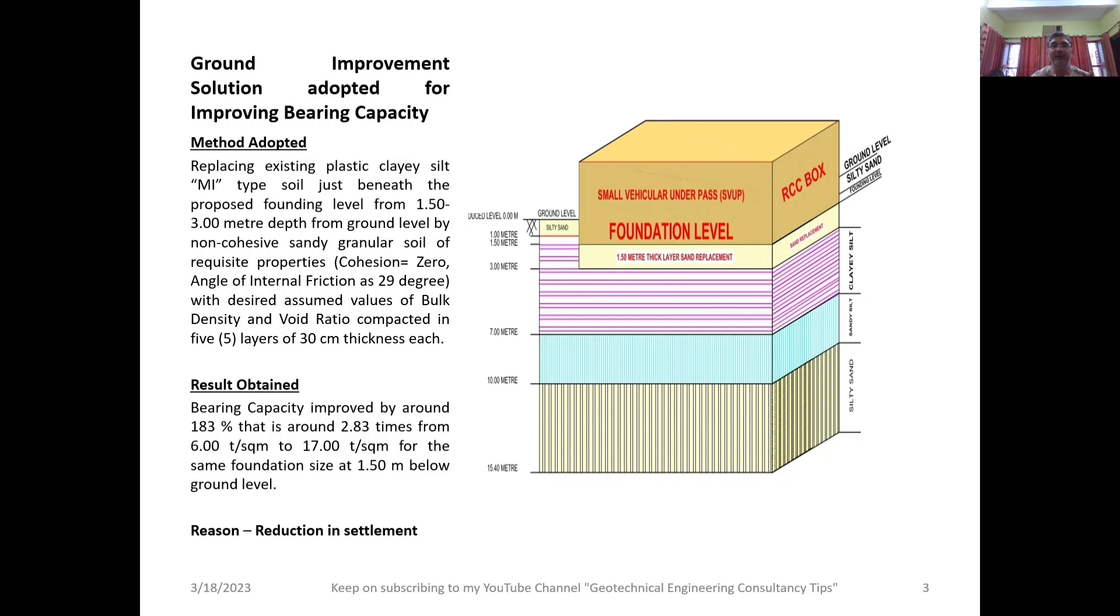We compacted this 1.5 meter thick sand layer in five layers of 30 centimeter thickness each. The results obtained were bearing capacity improved by around 183 percent, that is around 2.83 times, from 6 ton per square meter to 17 ton per square meter for the same foundation size at 1.50 meters depth below ground level.